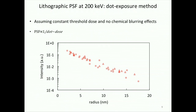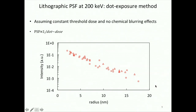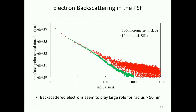We also measured the lithographic PSF at 200 kV, assuming a constant threshold dose and no chemical blurring effects. We measured the PSF by doing single pixel exposures — for each dose you measure the radius and plot radius against one over the dose, and by doing this you get the functional shape of the lithographic PSF. To study the effects of the substrate, I did Monte Carlo simulations comparing a 10 nanometer silicon nitride membrane versus a 300 micrometer bulk silicon substrate. The PSF starts to differ only for radii larger than 50 nanometers, so for radii smaller than 50 nanometers the PSF looks the same on both substrates.